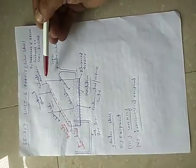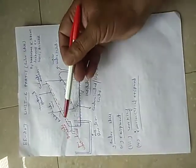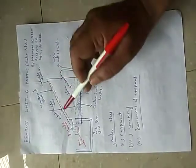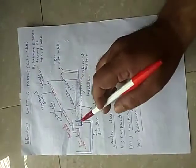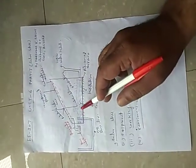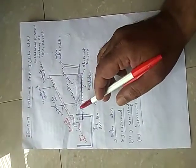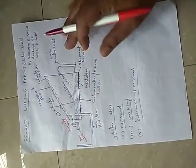After the definition of solar still, we come to the diagram. This is a container. This sheet here is a glass sheet. This container has impure water.